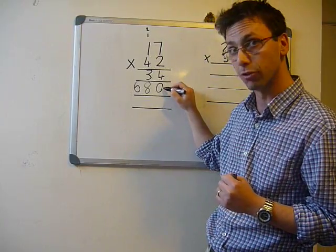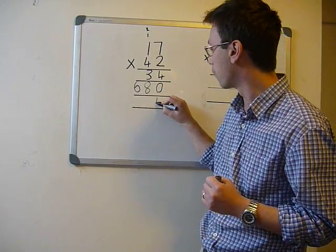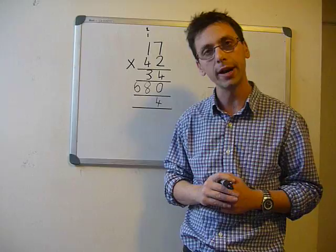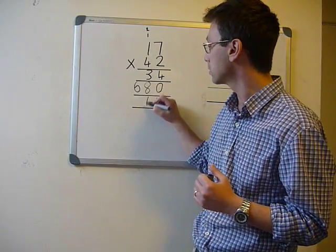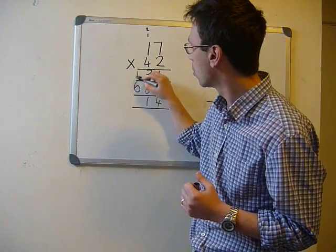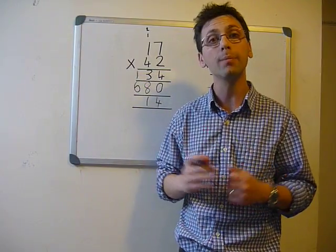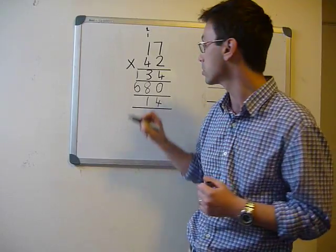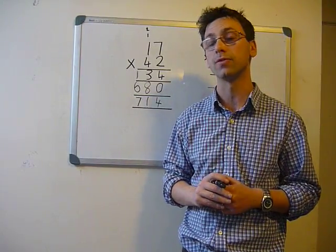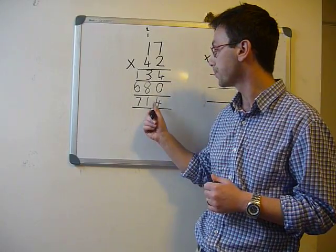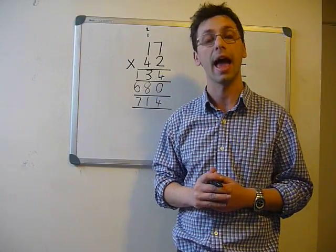4 plus 0 equals 4. 3 plus 8 equals 11. So 17 times 42 equals 714.